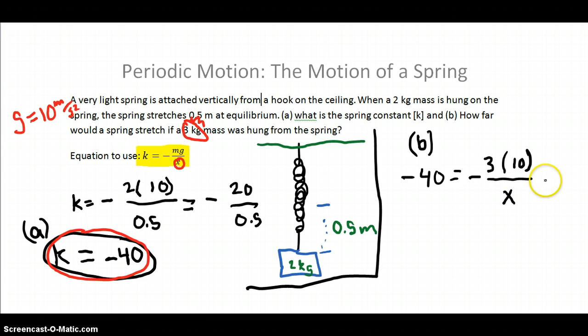To solve for this, I'm going to multiply both sides by x, and I'm going to divide both sides by 40. If I multiply this by x, multiply this by x, and divide both sides by negative 40.